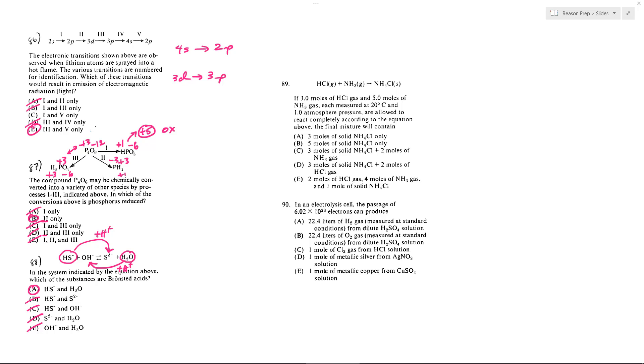89. If 3 moles of HCl gas and 5 moles of NH3 gas, each measured at 20 degrees Celsius and 1 atmosphere pressure, are allowed to react completely according to the equation above, what will the final mixture contain? So this is already balanced. We're going to have 3 moles of this, 5 moles of this.